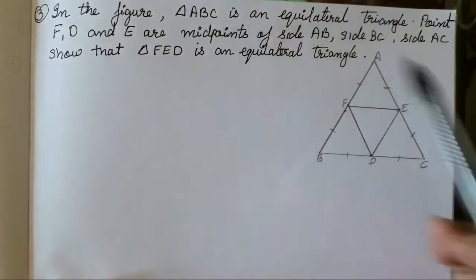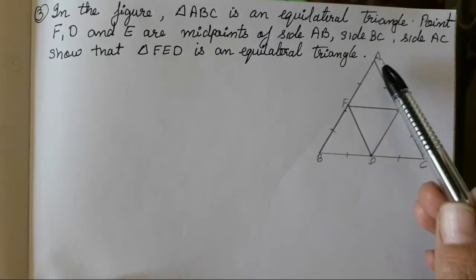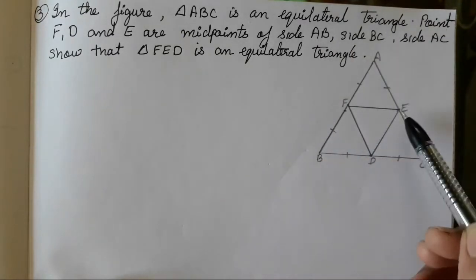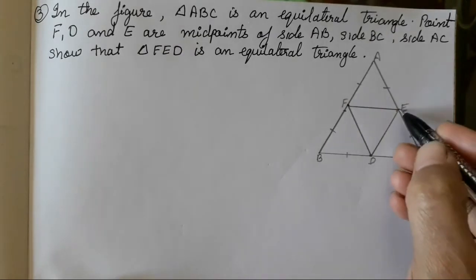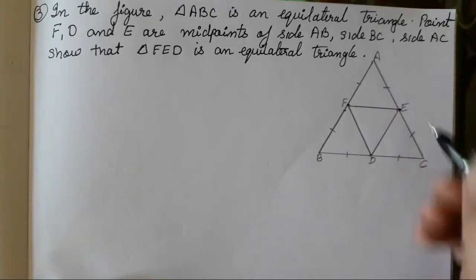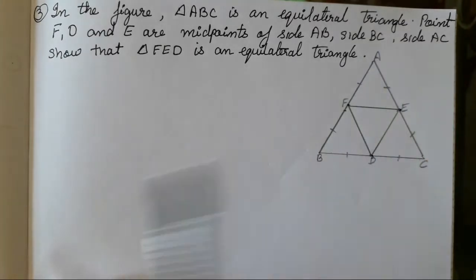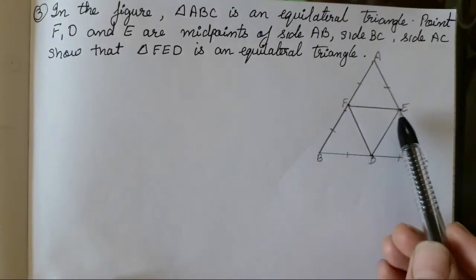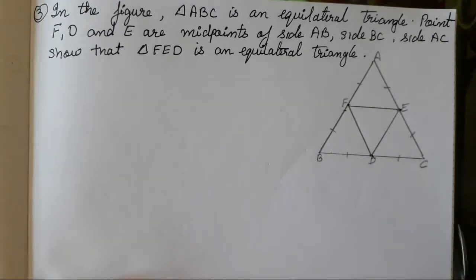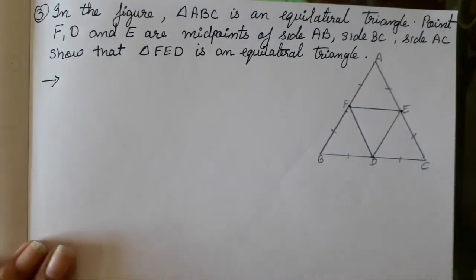In the figure, ABC is an equilateral triangle — all the sides are the same. Points F, D, E are the midpoints. Side AB midpoint is F, side AC midpoint is E, side BC midpoint is D. We have to show that FED is also an equilateral triangle. I hope you all have understood what is given and what is to be found.